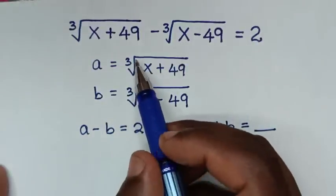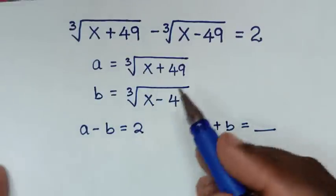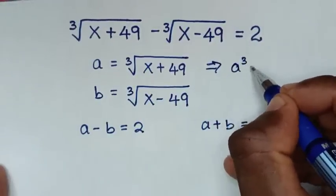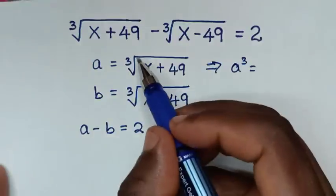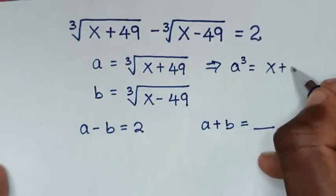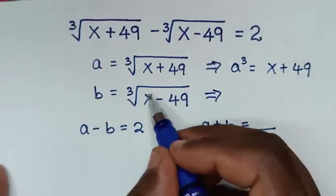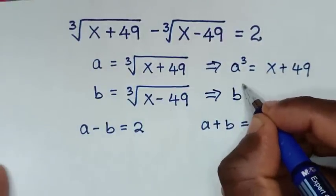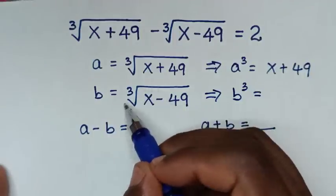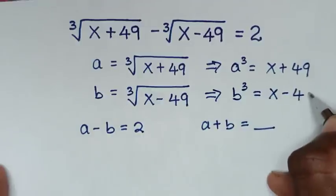To cancel the cube roots, we cube both sides. So a cubed equals x plus 49. Also, cubing both sides on the second equation, b cubed equals x minus 49.